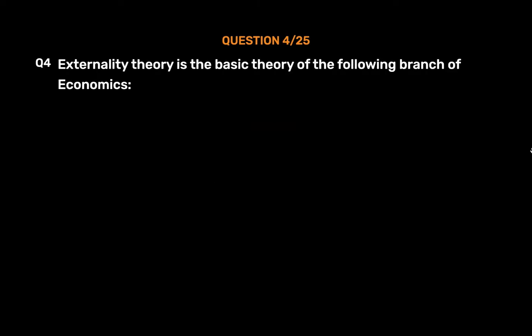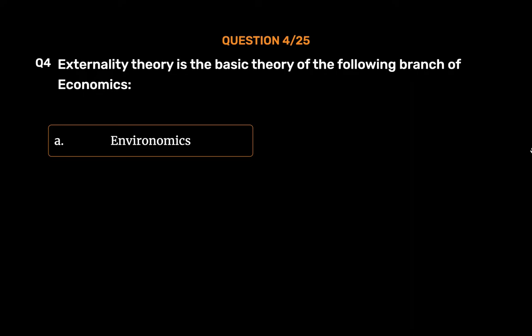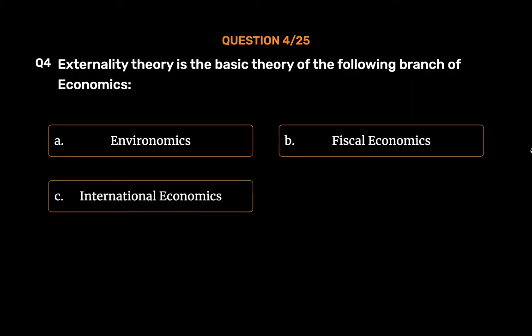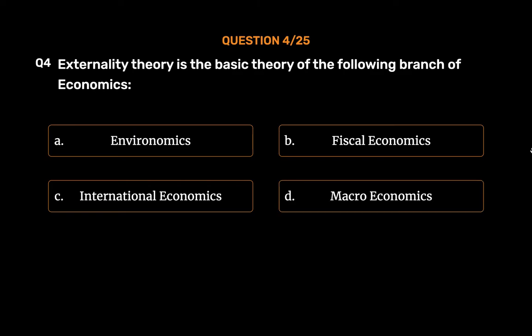Question No. 4. Externality theory is the basic theory of the following branch of economics: Option A. Environomics. Option B. Fiscal economics. Option C. International economics. Option D. Macroeconomics. The correct answer is Option A, Environomics.